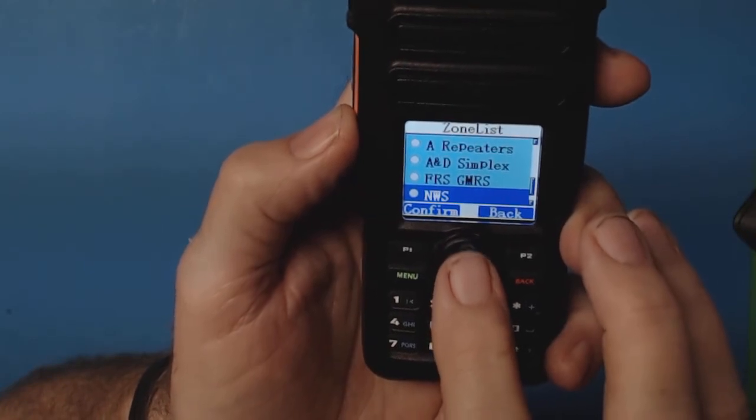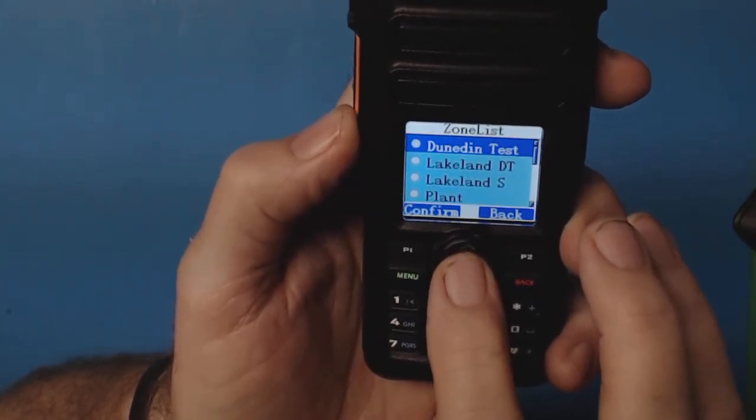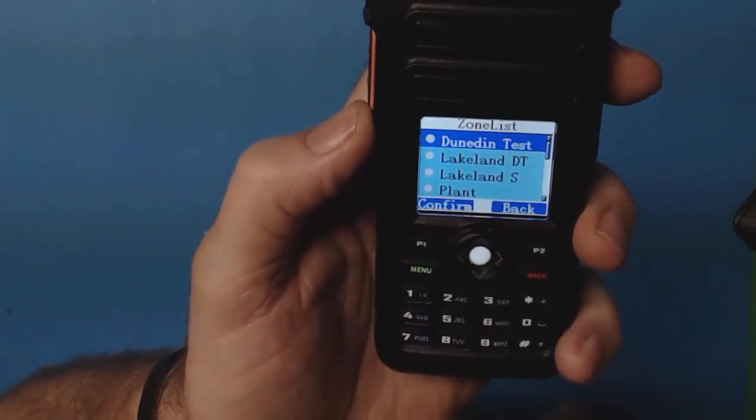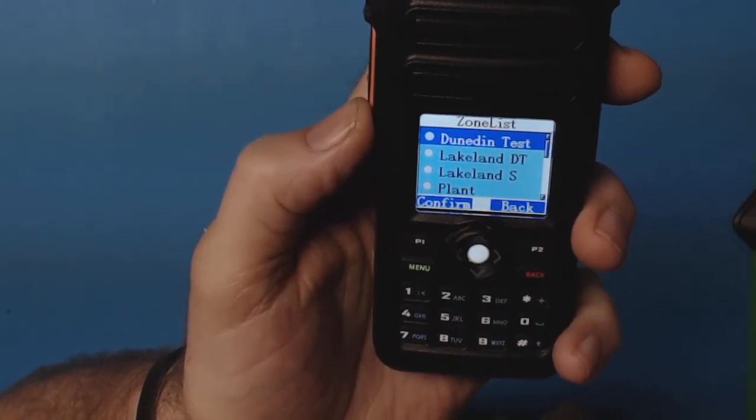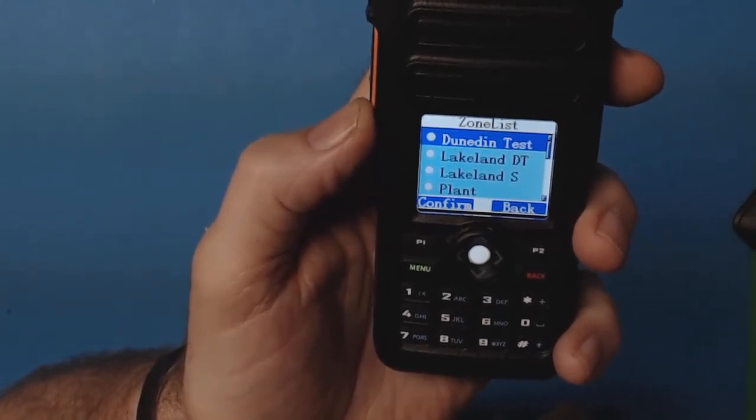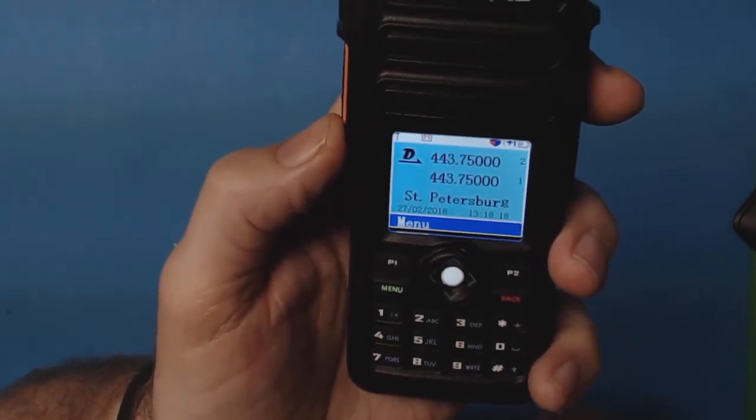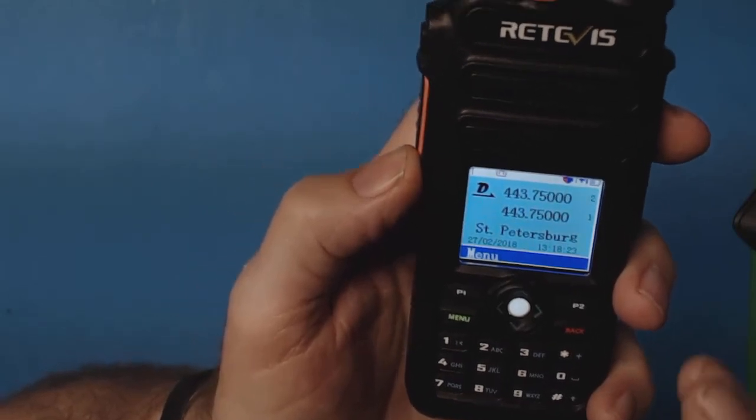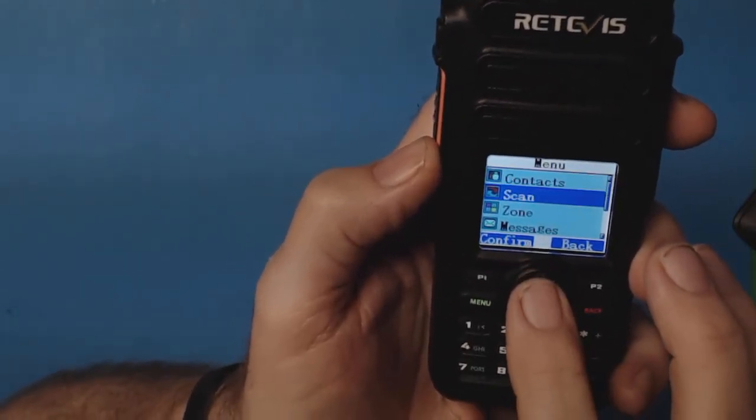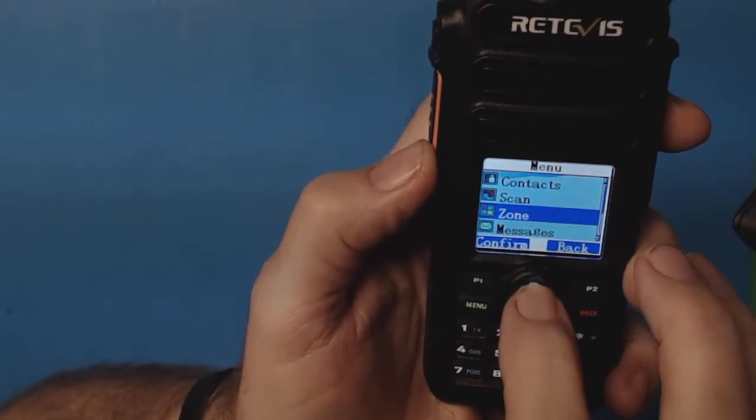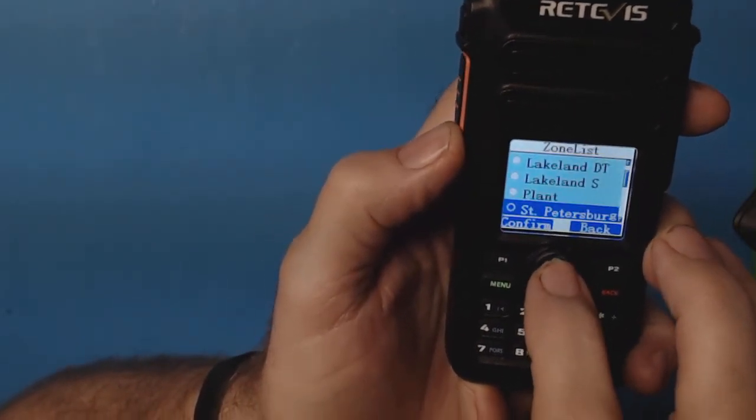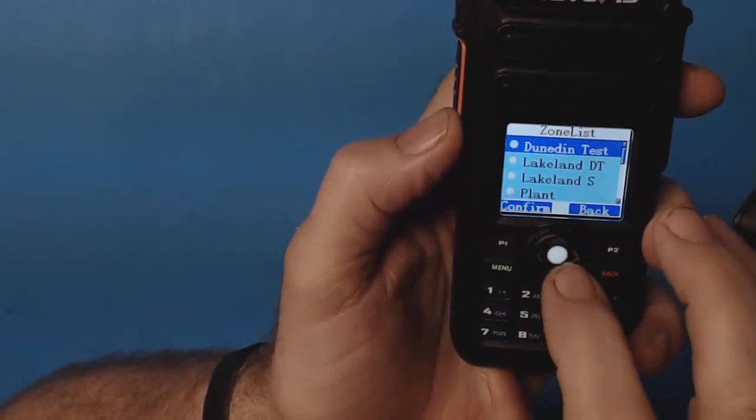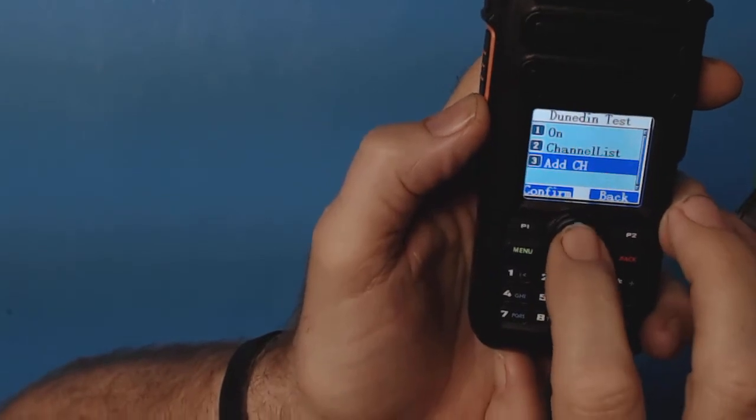There's GMRS, weather service, marine, and there's Dunedin Test. The reason Doug, who programmed this for me, called it Dunedin Test is he couldn't find all the parameters for that particular repeater. Now it timed out, so it went back to where it was. I'll stop talking so much and just try to get to it.